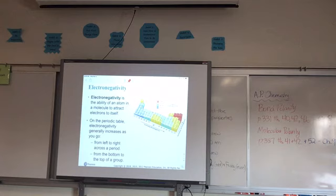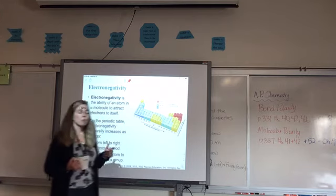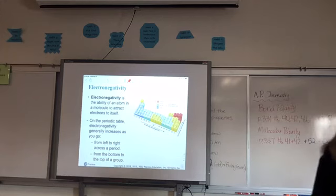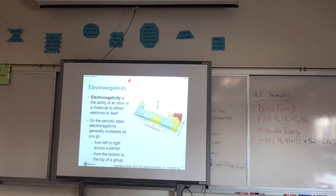All right, so what is electronegativity? The ability to attract electrons to an atom. That's part of it. This is where the part that we still need to discuss is the part that makes it different from electron affinity. In what situation is the atom attracting an electron to itself? When it's bonded to another atom. So when it says the ability of an atom in a molecule, we're specifically looking at in covalent bonds. Electronegativity is looking at covalent situations.